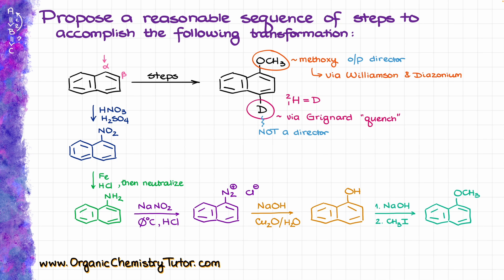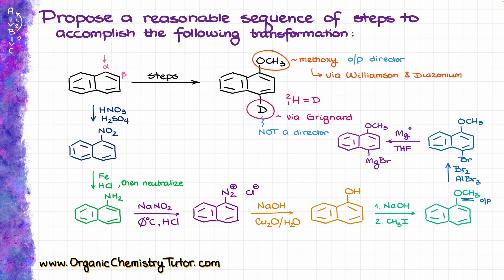Now we start working on placing deuterium in the para position to OCH3. To make a Grignard reagent, I need to put a halogen into the para position, which is easy to do via a simple electrophilic aromatic substitution — a simple halogenation reaction. We can do something like a reaction with Br2 in the presence of aluminum bromide as catalyst, making the corresponding bromide. Since OCH3 is an ortho/para director, the major product is going to be the para product, which is exactly what we're looking for. Finally, we make our Grignard reagent and treat it with D2O — deuterated water — to get our final product.